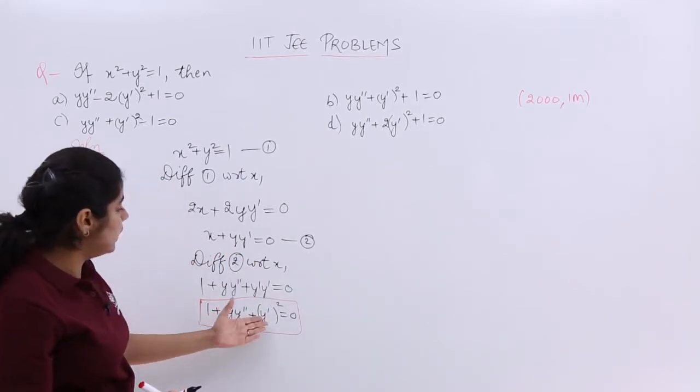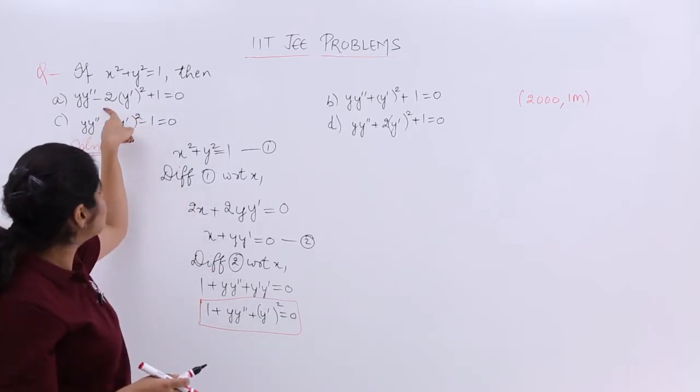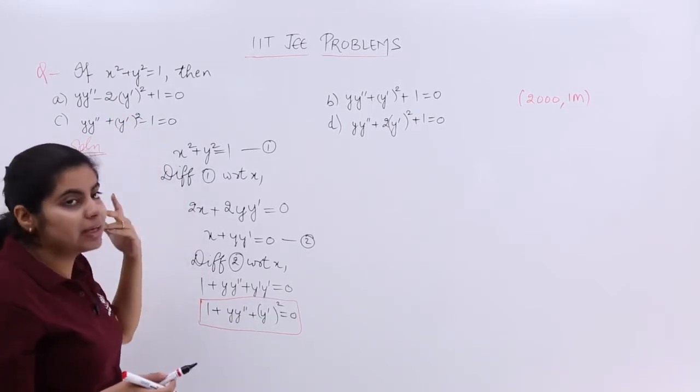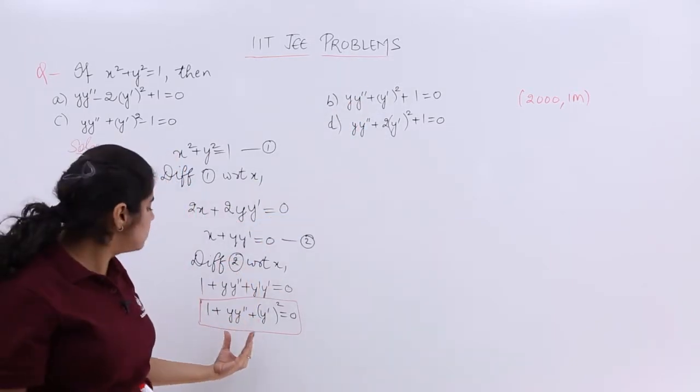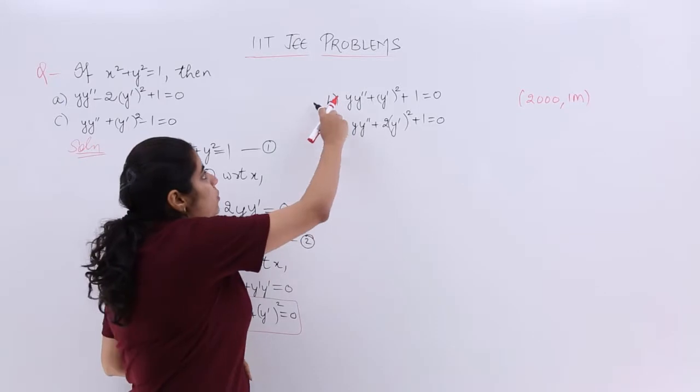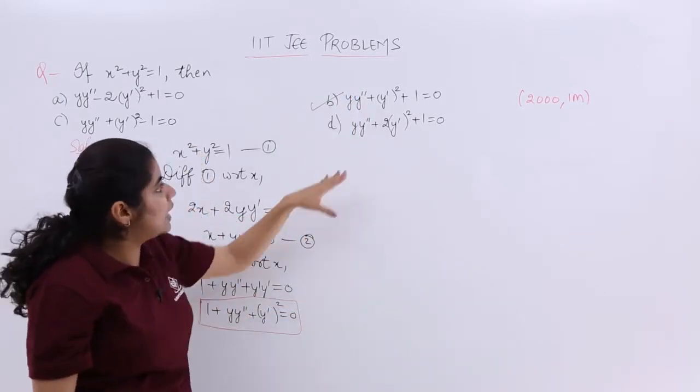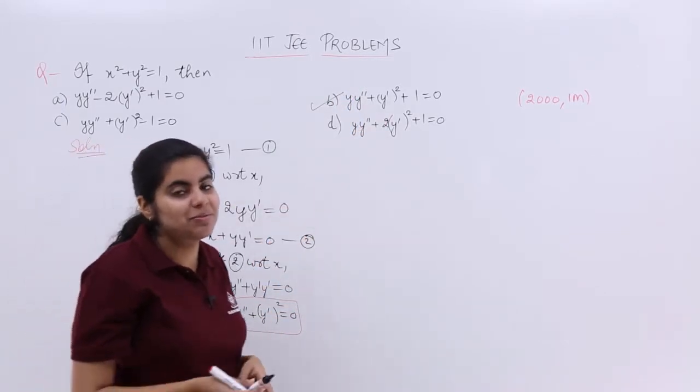So it should be all in plus, first thing. But option a has in minus, so a cannot be the answer. c has in minus, c cannot be the answer. Either b or d. Let us match it. So it basically matches option number b, yy'' plus (y')² plus 1 equal to 0.